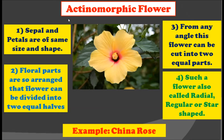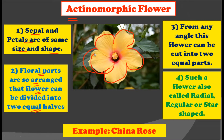First of all, the actinomorphic flower. In an actinomorphic flower, sepals and petals are of the same size. Here in the picture you can see the petals are of the same size. The floral parts are so arranged that the flower can be divided into two equal parts — from any angle, this flower can be cut into two equal halves.